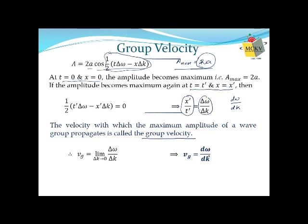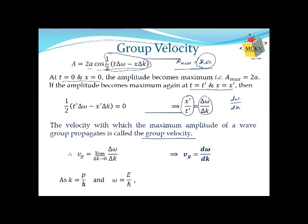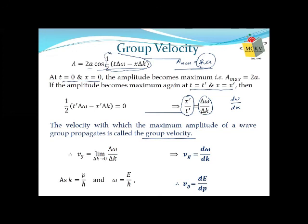Since k = p/ħ and ω = E/ħ, the group velocity can be represented as dE/dp — the rate of change of energy with momentum. To summarize: phase velocity is ω/k or E/p — the velocity of a single wave when phase remains constant. Group velocity is dω/dk or dE/dp — the velocity of the wave packet when many waves with slightly different frequencies propagate in the same direction.